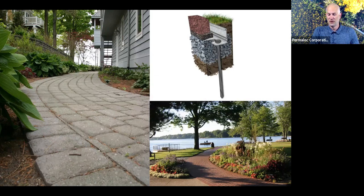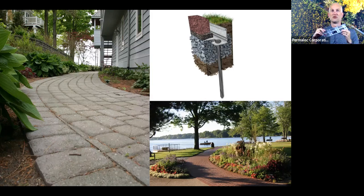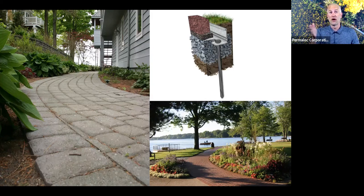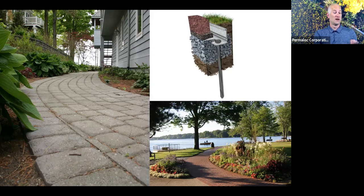Paver restraints are typically L-shaped with some sort of base allowing curves and angles to be formed, with pavers sitting either side to hold everything in place. It's nice and sturdy but very low profile — that low profile allows grass to grow right up to the pavers without any dead spots because the roots get deep and strong.